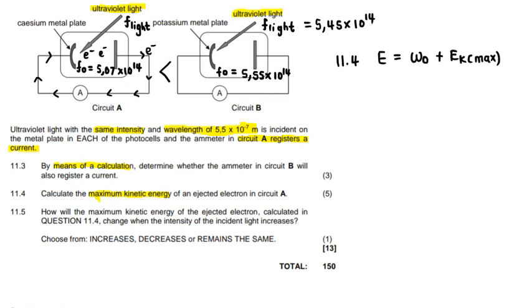We have that the energy of light or photon is equal to the work function plus the maximum kinetic energy. So let's expand this equation a little bit. We have that energy is equals to Planck's constant times the frequency of the light, which we've actually already calculated in 11.3. And then we have H times the threshold frequency plus the maximum kinetic energy.